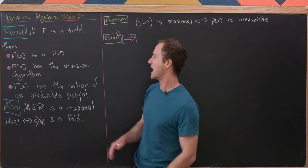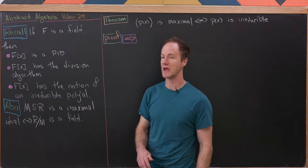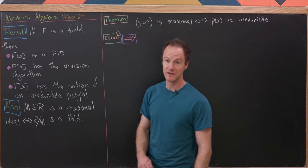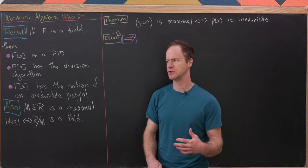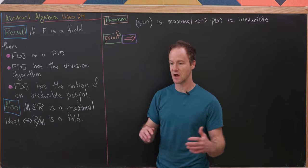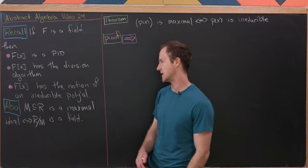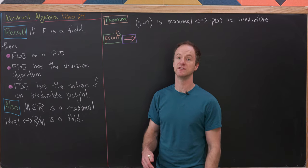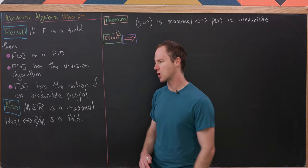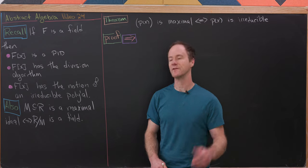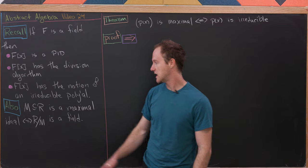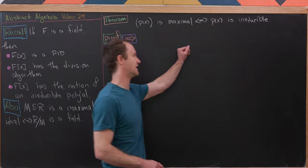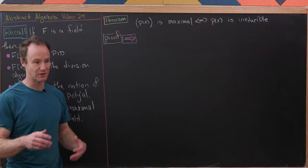I want to recall a couple of things. If F is a field, then the polynomial ring F[X] is a principal ideal domain (PID) — every ideal is principal. It has the division algorithm, which lets us construct greatest common divisors and write them as combinations of the original polynomials. It also has the notion of an irreducible polynomial — one not factorable into polynomials of smaller degree. And recall that M is a maximal ideal of R if and only if R mod M is a field.